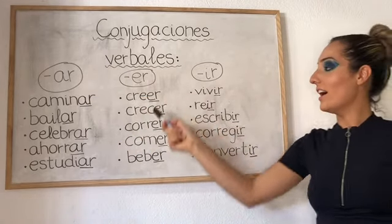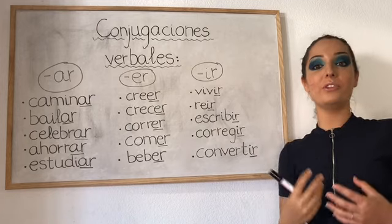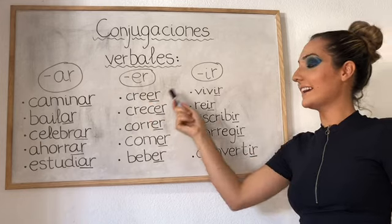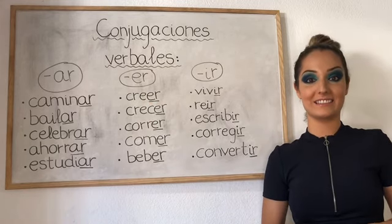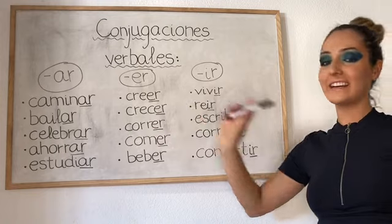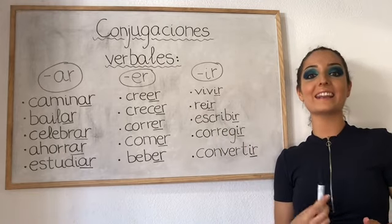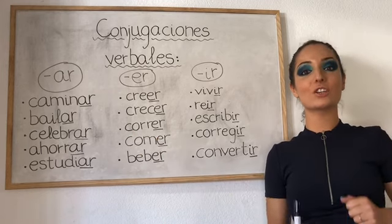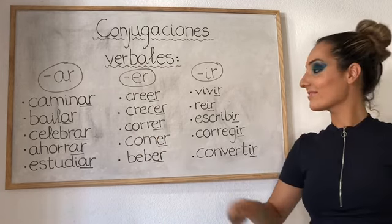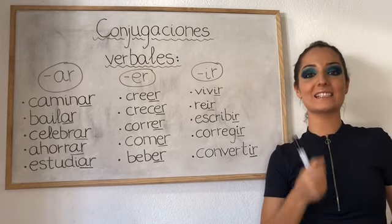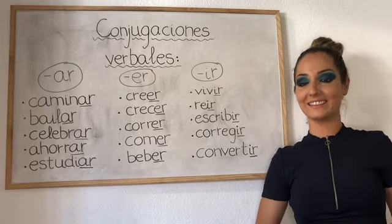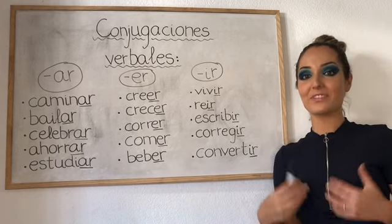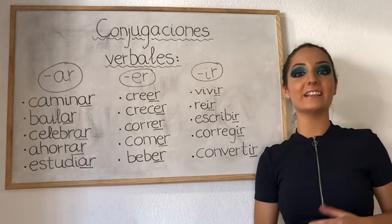And we have our examples for the verbs ending in ER — our second conjugation: CREER, to believe; CRECER, to grow up; CORRER, to run; COMER, to eat; BEBER, to drink. As you can see, all of them are ending in ER.